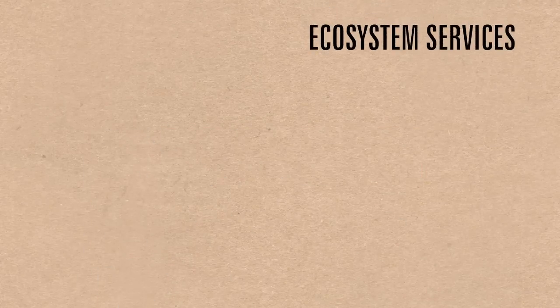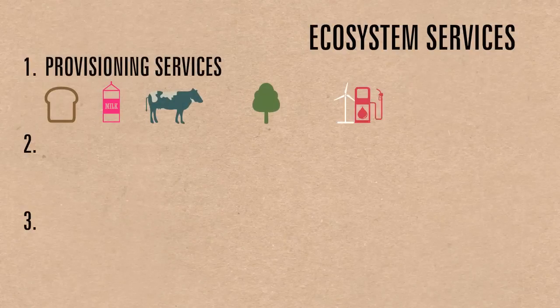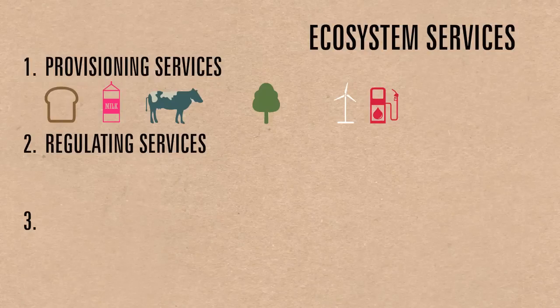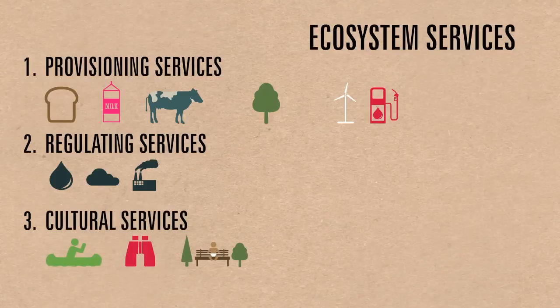Ecosystem services can be separated into three categories: provisioning services like food, fibre, or alternative fuels; regulating services like water, air, or pollution regulation; and cultural services like recreation, aesthetic values, or just leaving stuff behind for future generations.